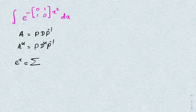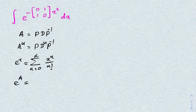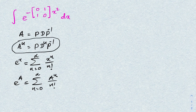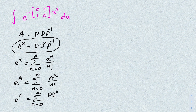I'm going to take the power series representation of e to the x. We know e to the x equals the sum from zero to infinity of x to the n over n factorial. Instead of x, we plug in matrix A, so e to the A equals sum from zero to infinity of A to the n over n factorial. Since A to the n equals P D to the n P inverse, we get e to the A equals the sum from zero to infinity of P D to the n P inverse over n factorial.